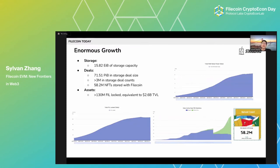There are around 72 petabytes of real data stored on Filecoin from over 3 million storage deals. According to stats from NFT.storage, there are over 58.2 million NFT objects stored on Filecoin. And in terms of assets — a part people often don't pay much attention to — there are currently 130 million Filecoin locked with the network, equivalent to around $2.6 billion in total value locked.